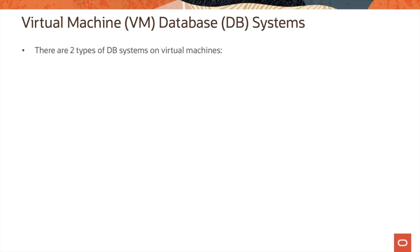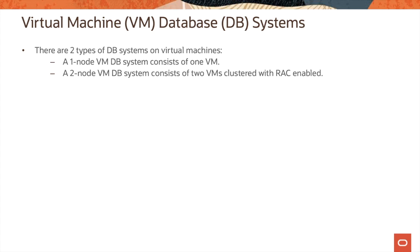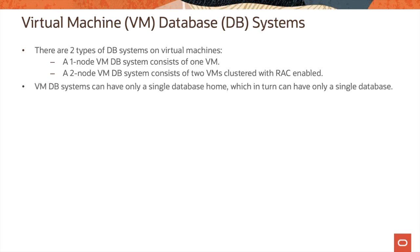Let us now look at the VM Database System. There are two types of database systems on virtual machines. The first is a one-node VMDB system, which consists of one virtual machine. The second is a two-node VMDB system, which consists of two VMs clustered with Real Application Clusters. VMDB systems can have only a single database home, which in turn can have only a single database.